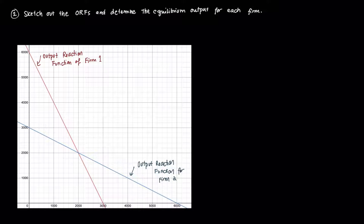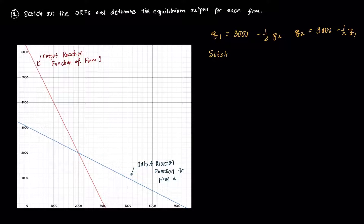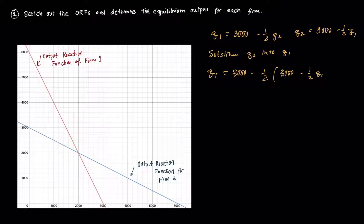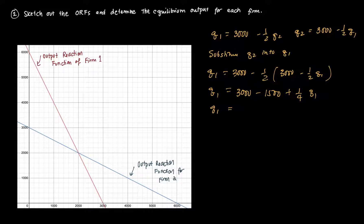We can solve for the Cournot equilibrium by substituting one firm's ORF into the other. Substituting Q2* = 3000 − ½Q1 into Q1* = 3000 − ½Q2 gives Q1 = 3000 − ½(3000 − ½Q1) = 3000 − 1500 + ¼Q1, so Q1 = 1500 + ¼Q1.